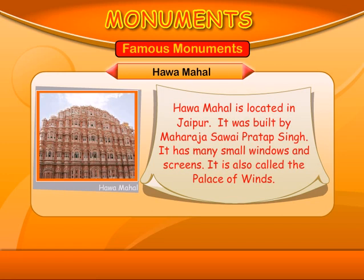Hawa Mahal. Hawa Mahal is located in Jaipur. It was built by Maharaja Sawai Pratap Singh. It has many small windows and screens. It is also called the Palace of Winds.